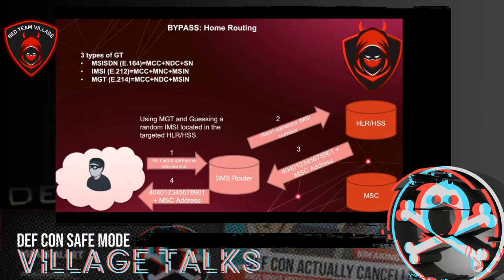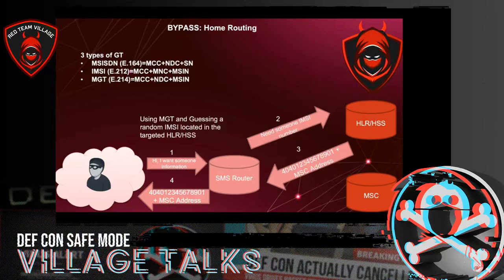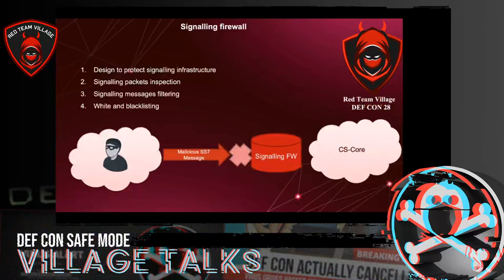In telecommunications, there are three types of Global Titles (GTs), which act like IP addresses. MSISDN consists of MCC, NDC, and SN. IMSI consists of MCC, MNC, and MSIN. MGT consists of MCC, NDC, and MSIN. A red teamer can use the MGT number and a valid random IMSI number to request other information regarding the targeted mobile number.